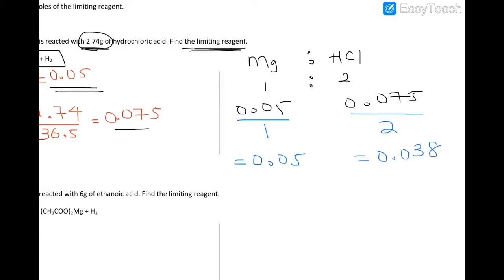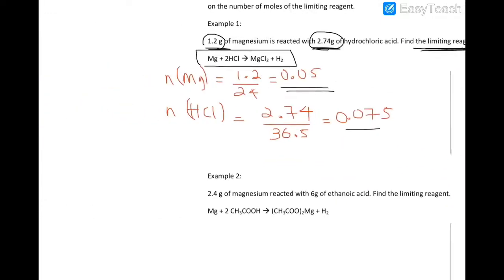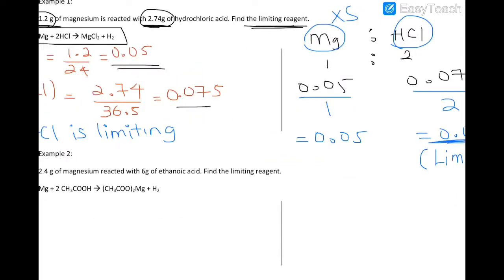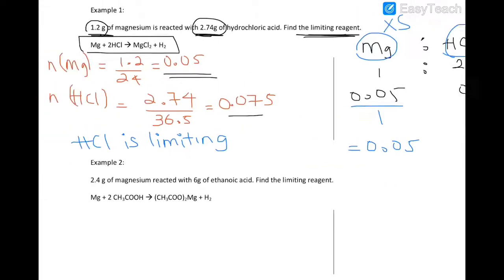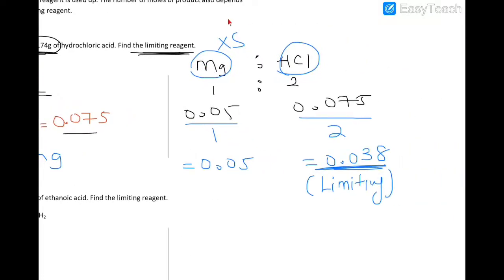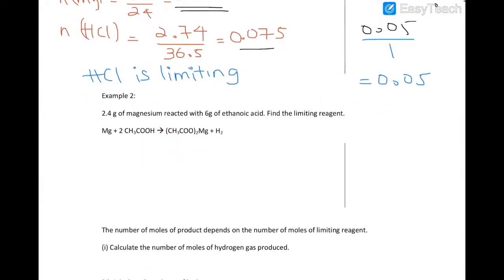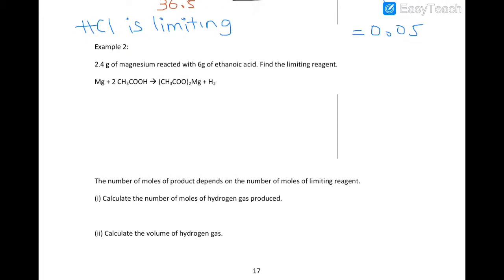After dividing, we get the smallest value on the HCl side. Because it is the smallest value, HCl is the limiting reagent and magnesium is in excess.